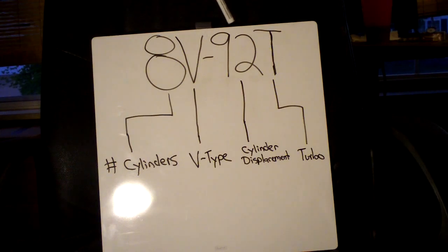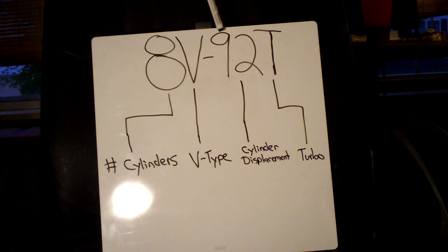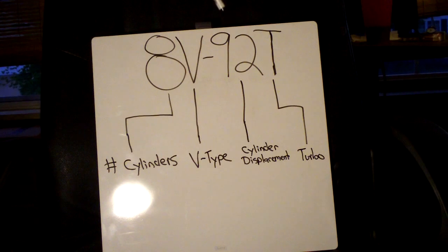Then you're going to have your dash, and then these next two numbers, as with all of the Detroit Diesel two-stroke engines, is going to be your cylinder displacement—the displacement per cylinder. So in this case, you're looking at 92 cubic inches per cylinder. And this can be 53—well in the larger engines it's not going to be 53, but in the larger engines you're looking at 71 or 92, just for example.